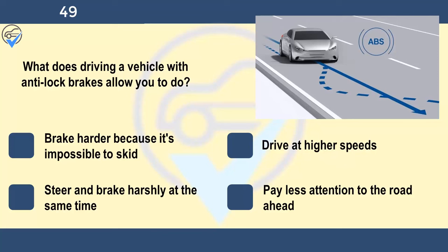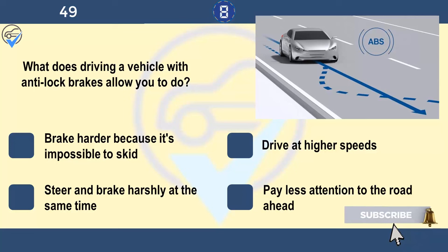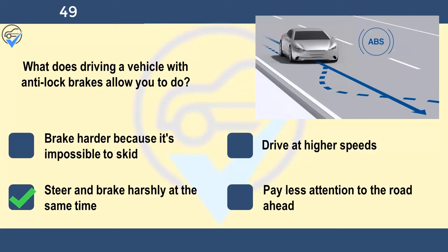What does driving a vehicle with anti-lock brakes allow you to do? Brake harder because it's impossible to skid, drive at higher speeds, steer and brake harshly at the same time, or pay less attention to the road ahead. If the wheels of your vehicle lock, they won't grip the road and you'll lose steering control. In good conditions, the anti-lock braking system (ABS) will prevent the wheels from locking and you'll keep control of your steering. In poor weather conditions or on loose surfaces, the ABS may be less effective.